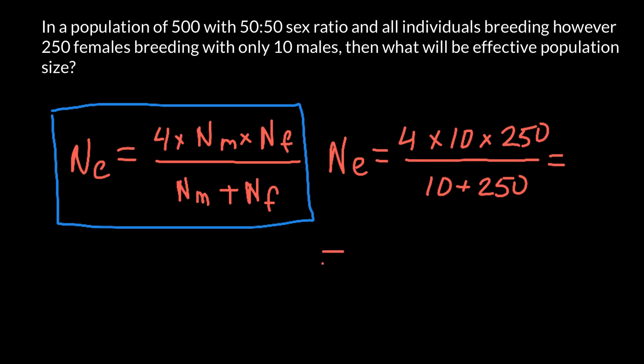So what we are going to have here, basically 2500 multiplied by 4, we are going to get 10,000 in numerator. And we are going to have 260 in denominator. And the answer would be 38.5.